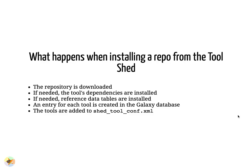When installing a repository from the tool shed, the repository is downloaded to the Galaxy machine and the tool's dependencies are installed if needed. Also, if needed, reference data tables are installed and an entry for each tool is created in the Galaxy database or the tool install database, depending on the configuration of Galaxy.